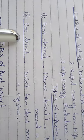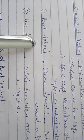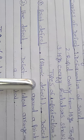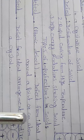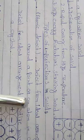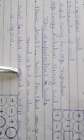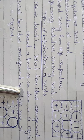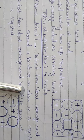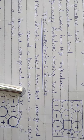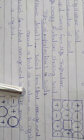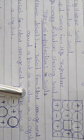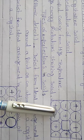Point defect, which we also call atomic defect, is a defect from the ideal arrangement around a point or an atom in a crystal. When the crystal has a defect but the defect is localized around one atom, we call it an atomic point defect.